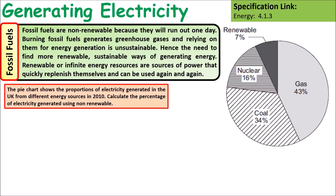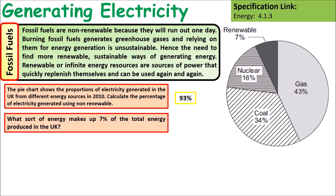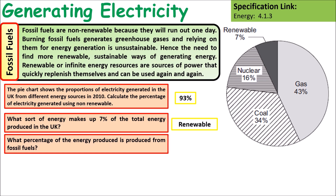The pie chart shows the proportions of electricity generated from different sources in 2010. To calculate the percentage using non-renewables, that would be nuclear plus coal plus gas, giving 93 percent. The remaining seven percent is renewable energy. The percentage produced by fossil fuels alone — gas plus coal — gives 77 percent.